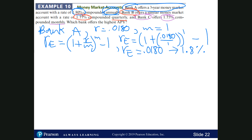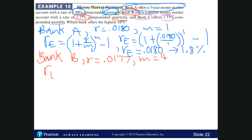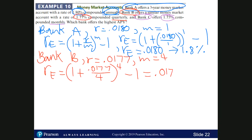For Bank B, the rate is 0.0177 compounded quarterly, so M equals 4. Using the formula: R sub E equals (1 plus 0.0177 divided by 4) to the power 4, minus 1, which gives 0.0178, so the effective rate or APY is 1.78%.